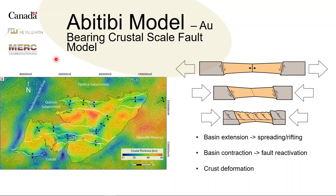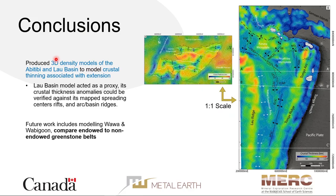Another question compared the Abitibi model to the Lau Basin model, noting that the Lau Basin crust is about 40 km deep versus 50 km, and asking whether the compression that happened to the Abitibi, combined with the fact that in the Archean the crust was also just a lot thicker than modern-day crust, explains the difference. The speaker responded that this pretty much explains the difference — you can still get breakout, just rifting and spreading would have been much slower because the crust is much thicker, but you could still get microplates breaking out in thicker crust.